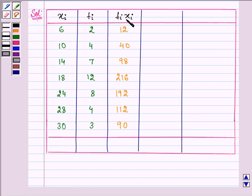Now we need to find out the sum of fi xi that is equal to 760 and we need to find out the sum of fi also and that is equal to 40.